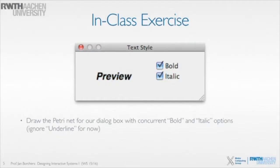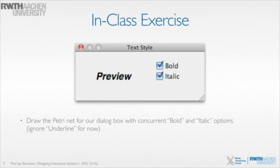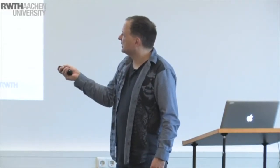So that's the general idea of Petri Nets. Given that information, we're back to the exercise. I'd like you to try and draw a Petri Net that models this dialog. Start like last time — first draw a Petri Net that only models bold. I highly recommend starting with just the bold part for now, and then extend it with a second option: italics.